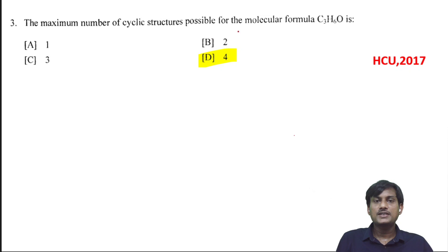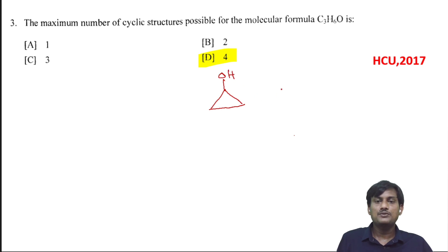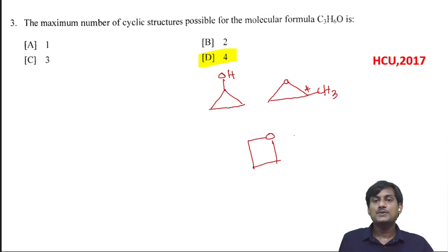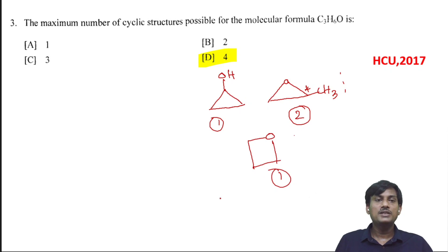The maximum number of cyclic structures possible for C3H6O: taking a three-membered ring with OH — this has C3H6O — and also a three-membered ring with a CH3 group. Taking a four-membered ring, this four-membered ring has two asymmetric centers, so two enantiomers are possible. So the total possible number of cyclic structures is four.